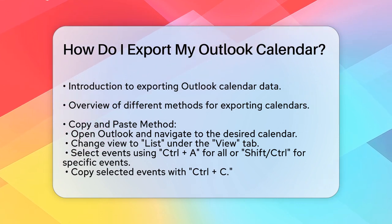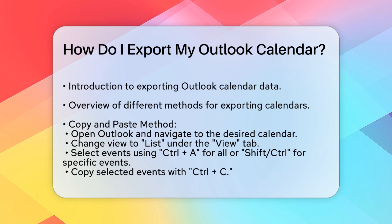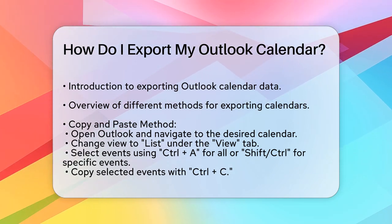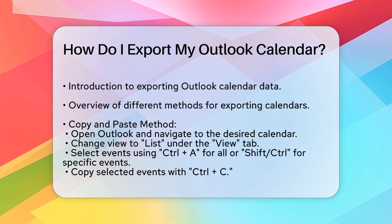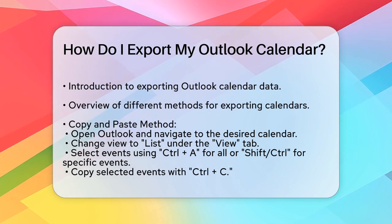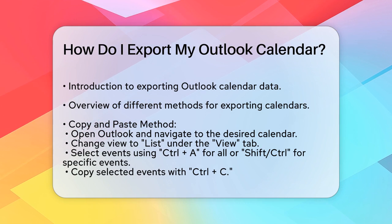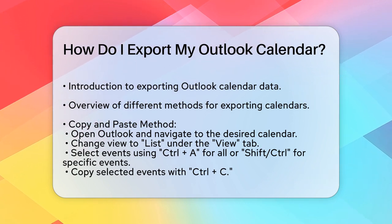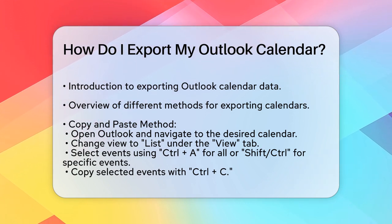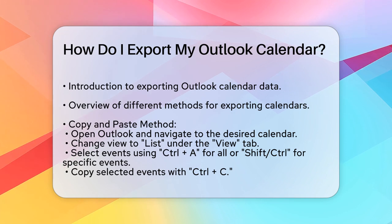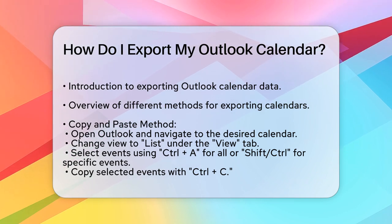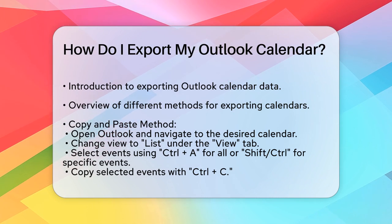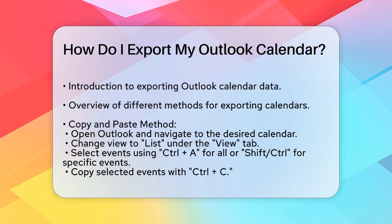Start by opening Outlook and navigating to the calendar you want to export. Click on the View tab and select List under the Change View option. This will convert your events into a list format. Next, select the events you want to export. You can select all events by pressing Ctrl+A, or select multiple events by holding Shift for adjacent events or Ctrl for non-adjacent events. Right-click on the selected events and click Copy, or use the shortcut Ctrl+C.